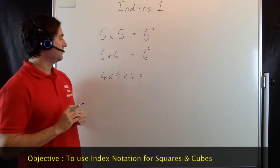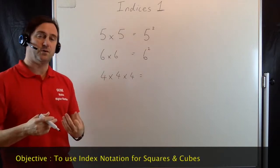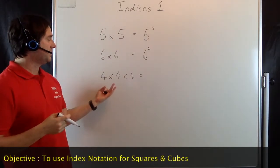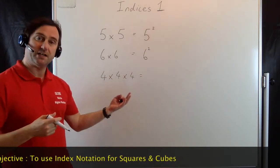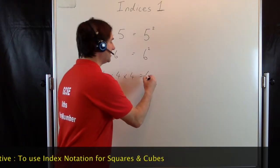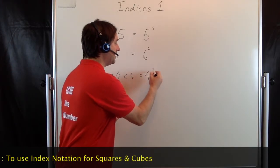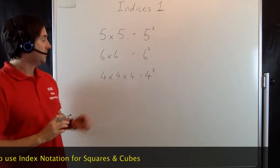That would be written as 4 to the power of 3 or 4 cubed. So 4 × 4 × 4 in index notation is written as 4 cubed.